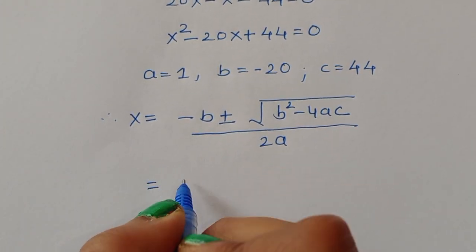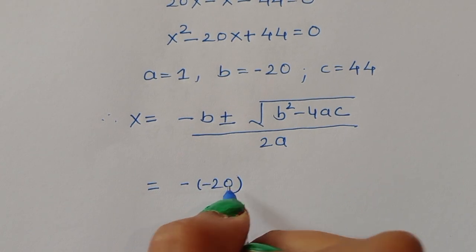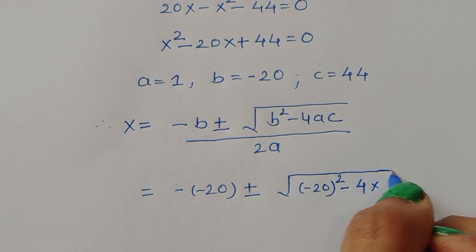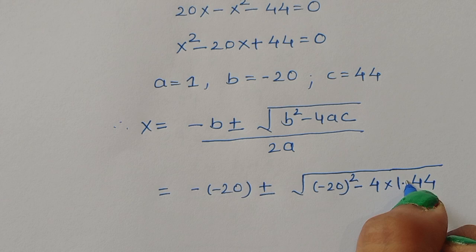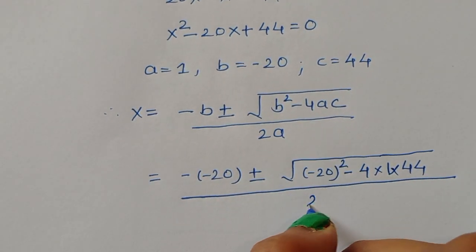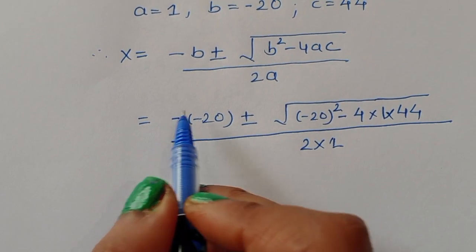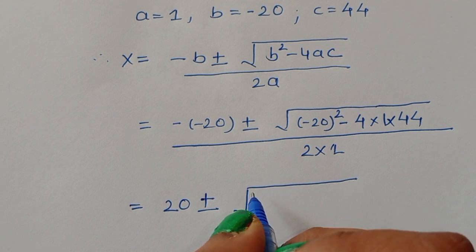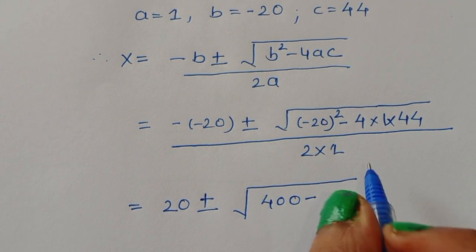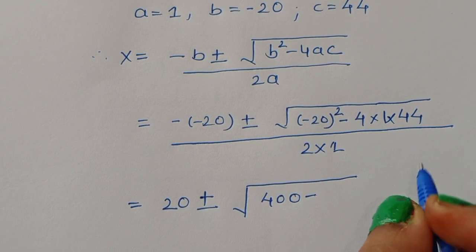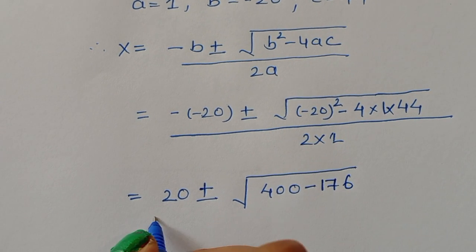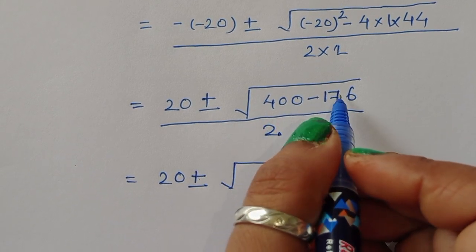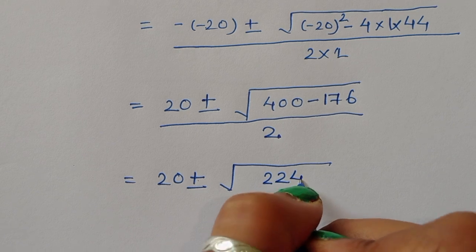Substituting the values of a, b, and c: x equals minus (minus 20) plus or minus square root of (minus 20) squared minus 4 times 1 times 44, divided by 2 times 1. This simplifies to 20 plus or minus square root of 400 minus 176, divided by 2. Since 4 times 44 equals 176, we get 400 minus 176 under the square root.